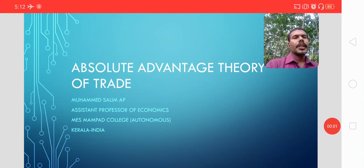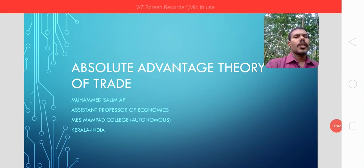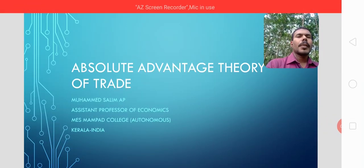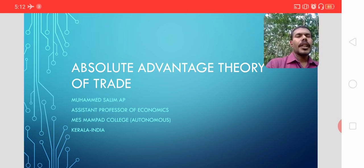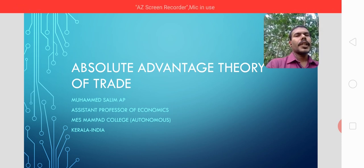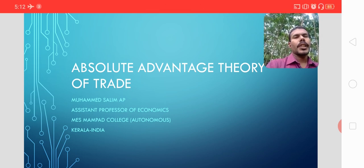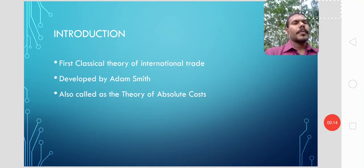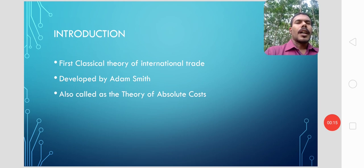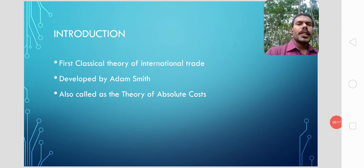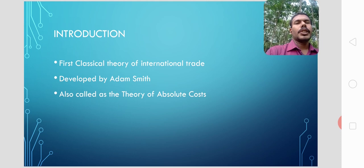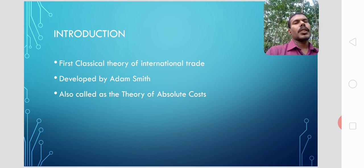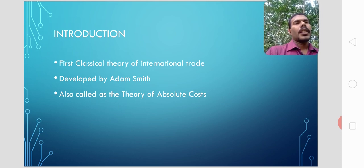Welcome to a new video in International Economics. We are in the second module, which is International Trade Theories. We are starting the classical theory of trade. Today we have the Absolute Advantage Theory of International Trade, which is the first classical theory of international trade. It was developed by the father of modern economics, Adam Smith.